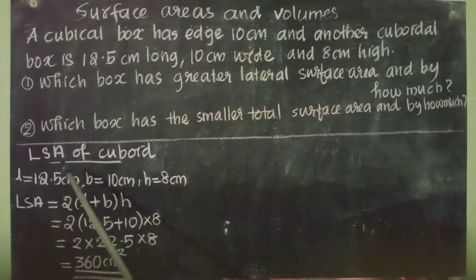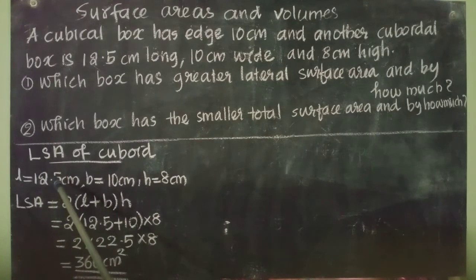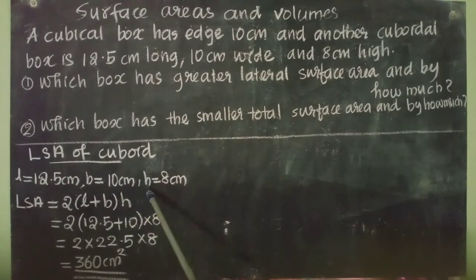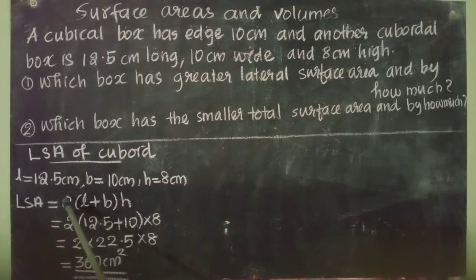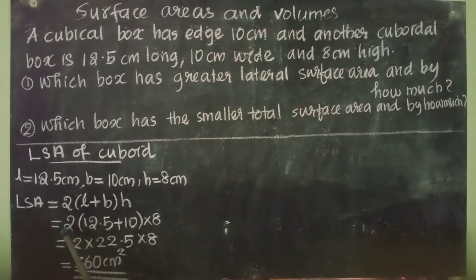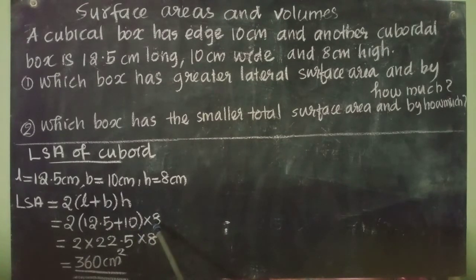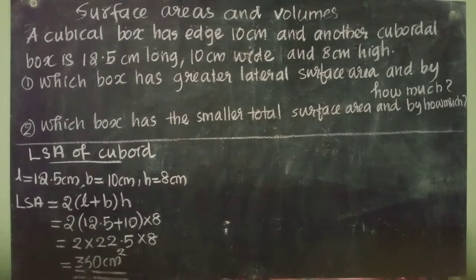Let us start. First, lateral surface area of cuboid. L = 12.5 cm, B = 10 cm, H = 8 cm. LSA = 2 × (L + B) × H = 2 × (12.5 + 10) × 8 = 2 × 22.5 × 8 = 360 cm².